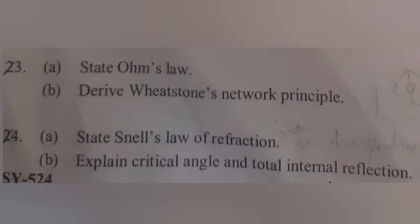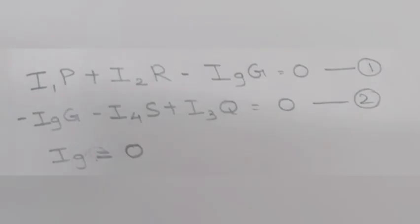Question 23B: Derive Wheatstone network principle. Answer: I₁P plus I₂R minus IₐG equals zero. Equation 1. Minus IₐG minus I₄S plus I₃Q equals zero. Second equation. When Iₐ equals zero, I₁ equals I₃, I₂ equals I₄.